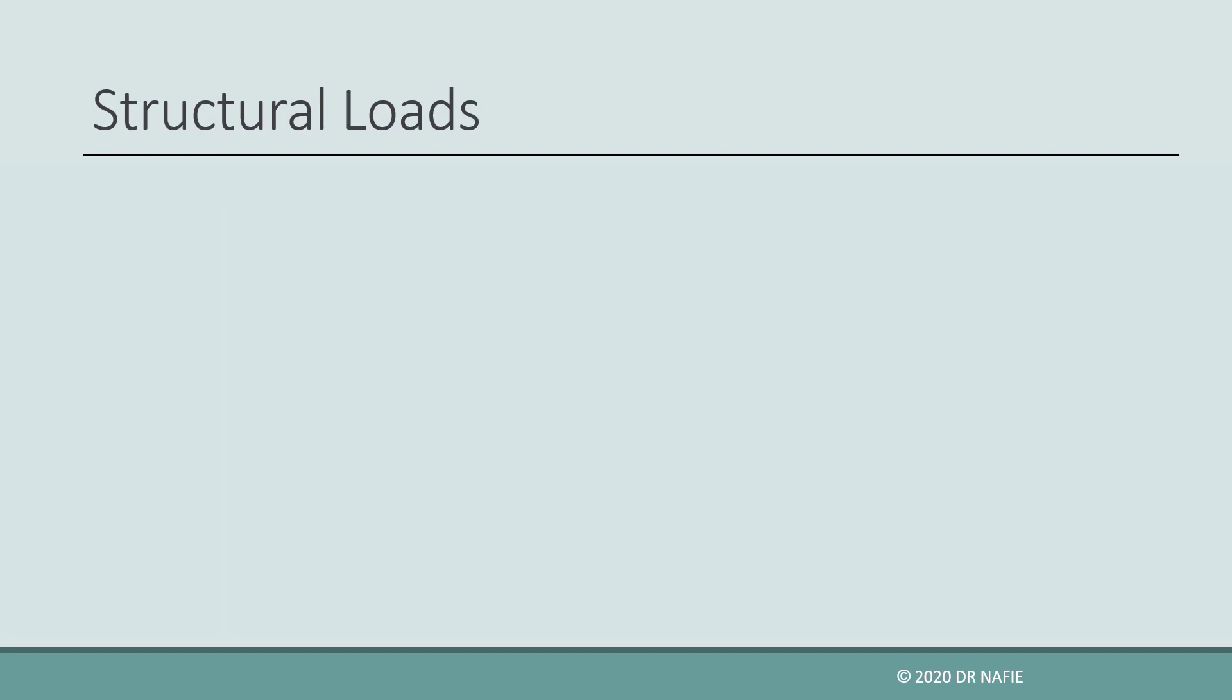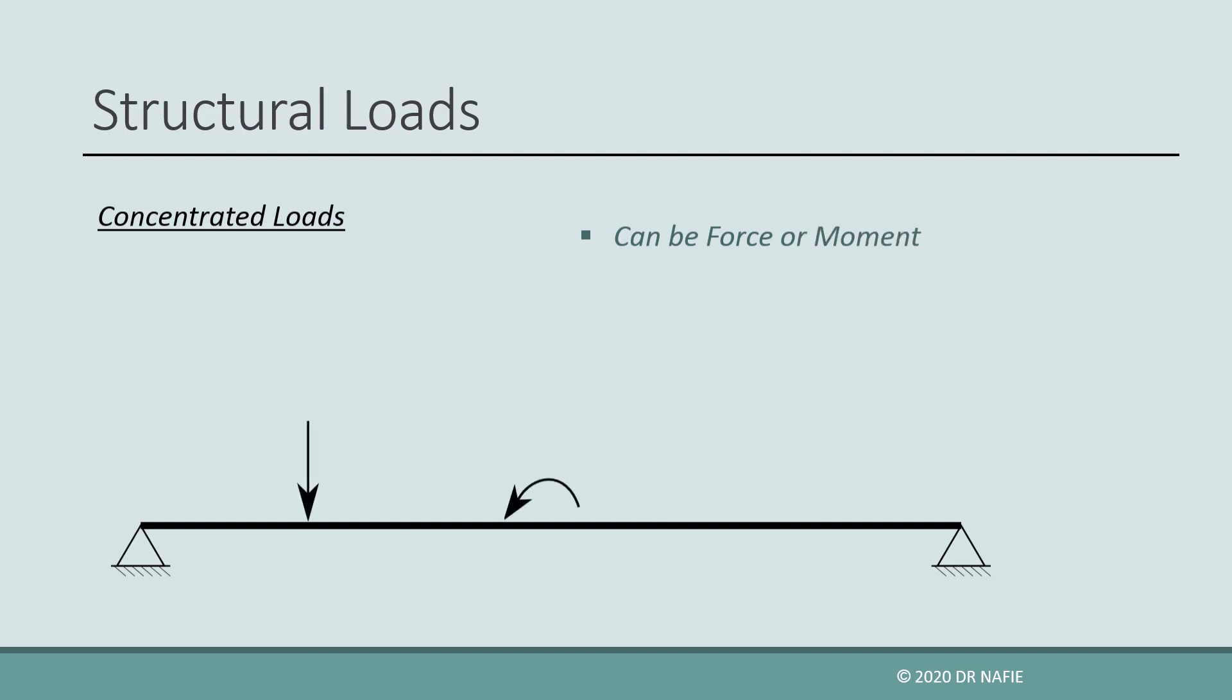First, let us discuss how concentrated loads are defined. A concentrated load can be a force or a moment. To define a concentrated load, we must define three attributes: its location or point of application, its direction, and its magnitude. The units of concentrated load is that of the force, which is the kilonewton, or of the moment, which is kilonewton-meter.